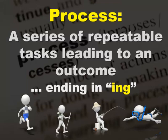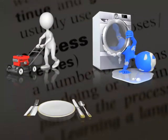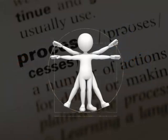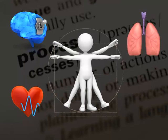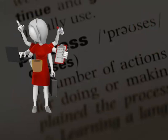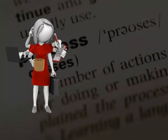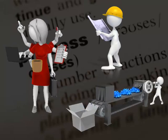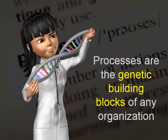You have processes at home, like mowing the lawn, doing the laundry, or washing the dishes. Your body is made up of a series of biological processes — your brain is thinking, your heart is pumping blood, and your lungs are breathing. And you have processes at work, like attending meetings, writing reports, invoicing, designing and building things. All of these are processes. You are surrounded by processes every day. These are the genetic building blocks of any organization.